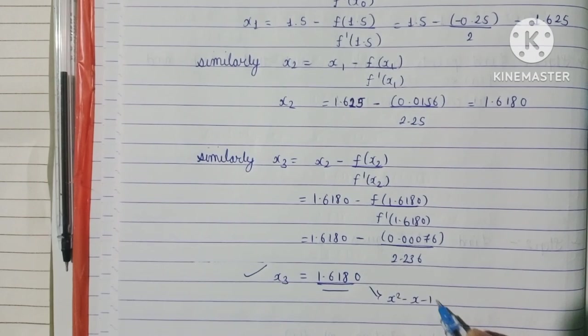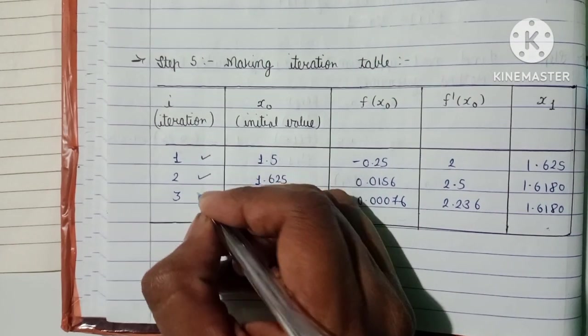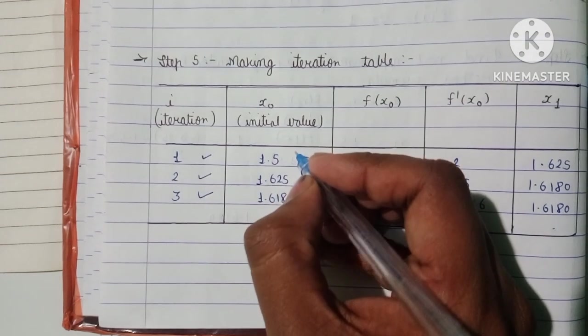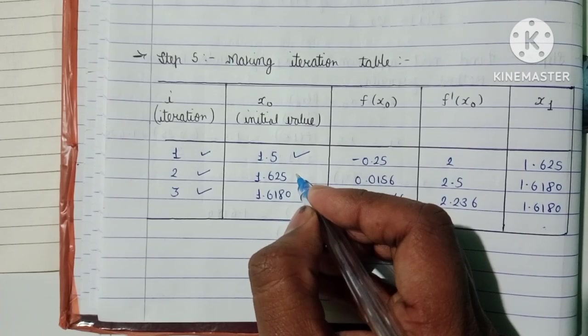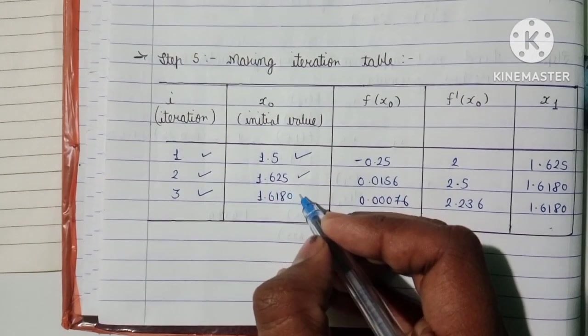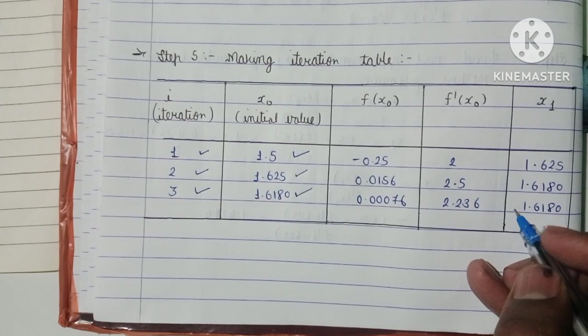Step 5 is making an iteration table. We get our answer in three iterations: x₀ = 1.5, x₁ = 1.625, x₂ = 1.6180, x₃ = 1.6180. When we put 1.6180 again, we get 1.6180. Since these two values are repeating, 1.6180 is our real root.